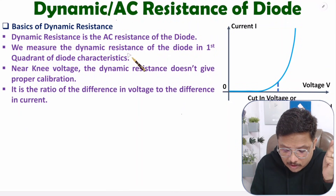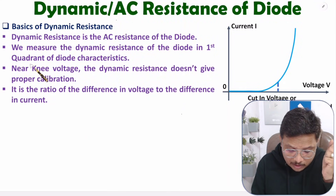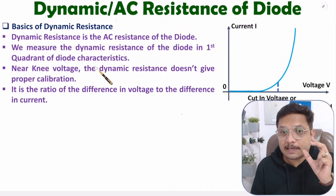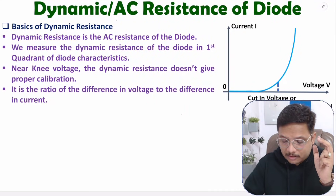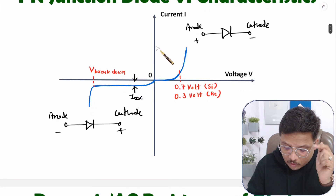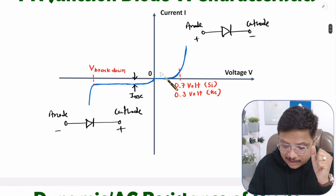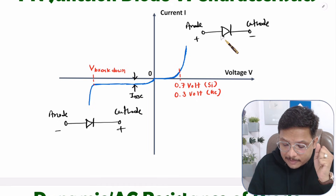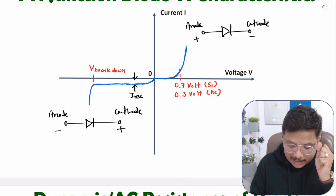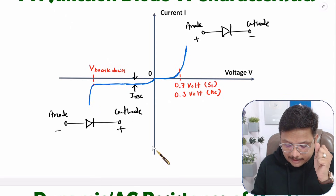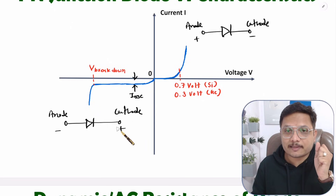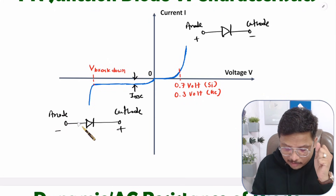We measure dynamic resistance of a diode in the first quadrant of the diode characteristic. In my last video, I explained the diode characteristic. In the first quadrant, the diode is kept in forward bias. To keep the diode in forward bias, the anode should be positive with respect to the cathode. In the third quadrant, the diode is in reverse bias, where the anode is negative with respect to the cathode.